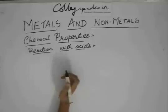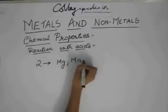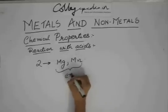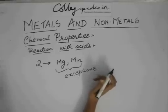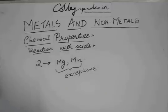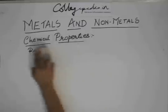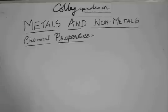This HNO3 will not produce H2. But there are two metals — magnesium and manganese — which are exceptions. They will react with HNO3 to produce H2. They will not let the hydrogen get oxidized to water. So, remember these two exceptions. If asked, write that magnesium and manganese do not follow the same trend as other metals — they let the hydrogen evolve.